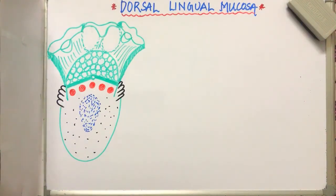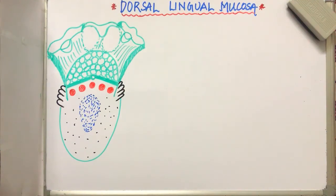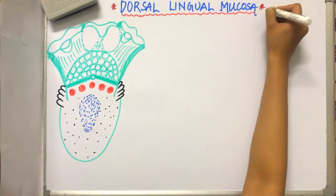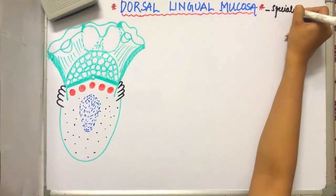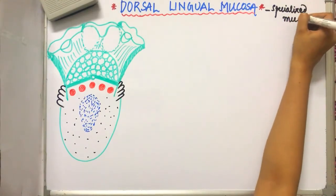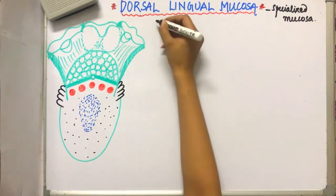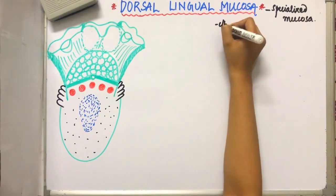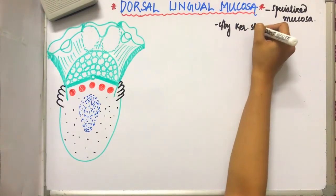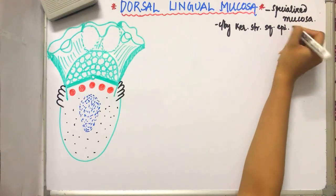Hello guys, welcome back to my channel. In this video we will be discussing about the dorsal lingual mucosa. As we have already seen in the classification of oral mucous membrane, the dorsal lingual mucosa is the specialized mucosa. It is covered by keratinized stratified squamous epithelium.